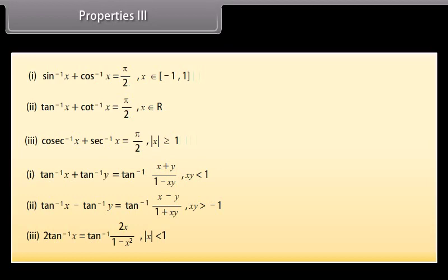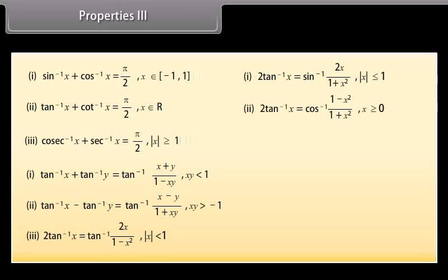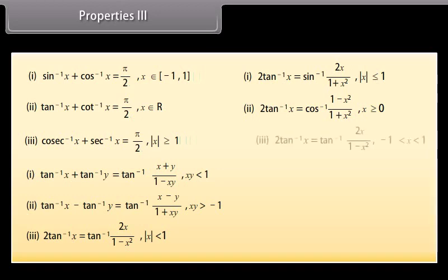Further properties: 2 tan⁻¹x = tan⁻¹(2x/(1 − x²)), for |x| < 1. 2 tan⁻¹x = sin⁻¹(2x/(1 + x²)), for |x| ≤ 1. 2 tan⁻¹x = cos⁻¹((1 − x²)/(1 + x²)), for x ≥ 0.